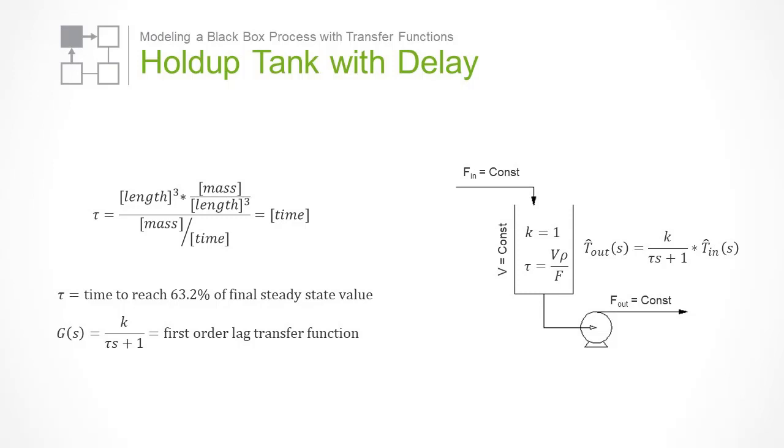K is called the process gain. In this case, it is equal to 1, but in other cases, it may have a unit and a different value.